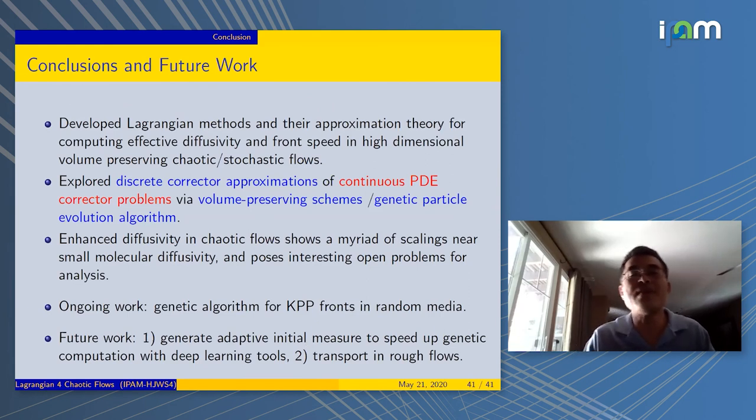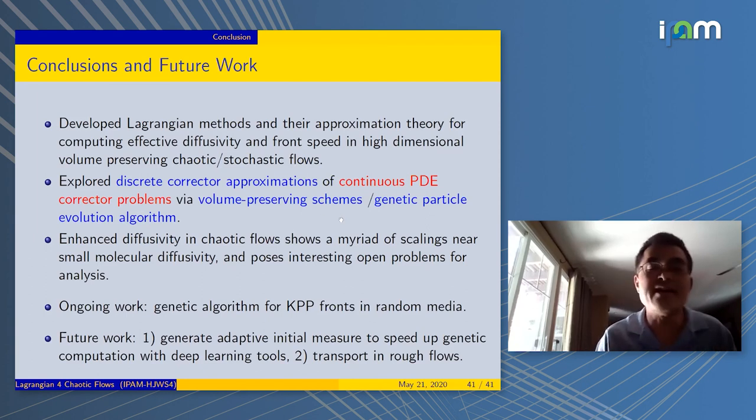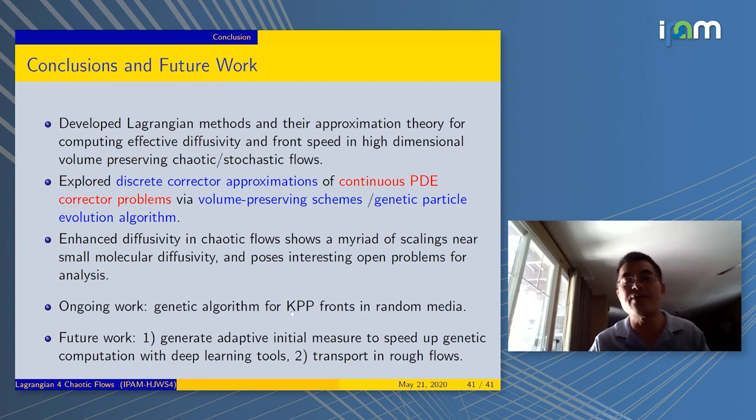Time to conclude. We developed a Lagrangian method and their approximation of effective diffusivity and front speed. In particular, the discrete corrector approximations of the continuous PDE case. In two instances: one is volume-preserving scheme, the other one's genetic particle evolution. There's a lot of interesting problems for analysis remaining. Of course, the next logical step is to extend this genetic algorithm for random media, KPP fronts.